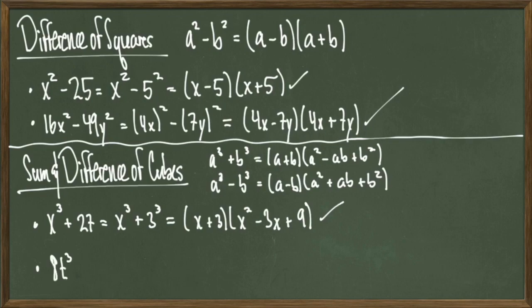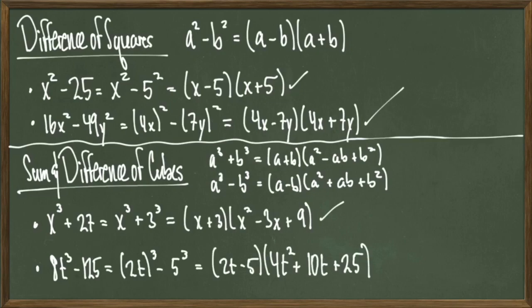Lastly, look at 8t cubed minus 125. This equals 2t quantity cubed minus 5 cubed. We appeal to the difference formula above to get 2t minus 5 times the quantity 4t squared plus 10t plus 25.